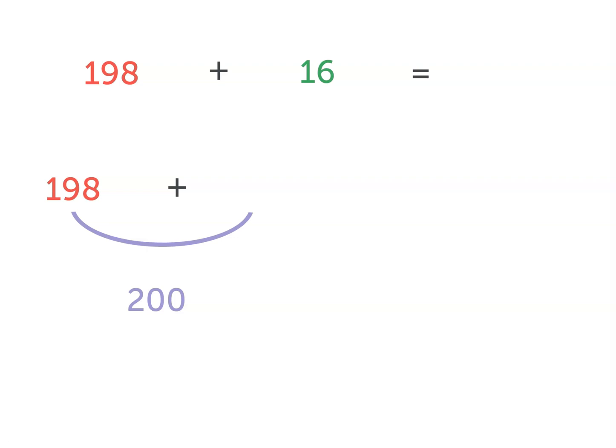You can think of the squares or count up to 200. 198 plus 2 is 200.